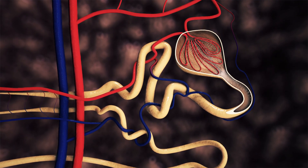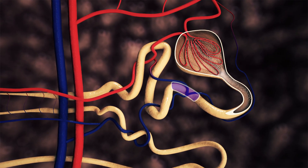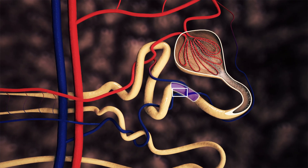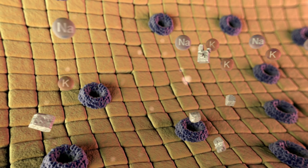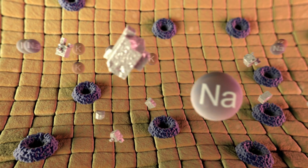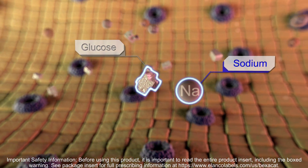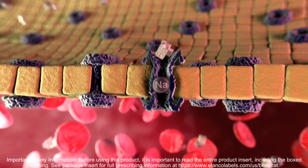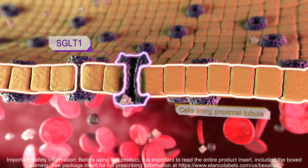These are SGLT1 and SGLT2. SGLT2 is the primary mechanism of glucose absorption from the filtrate, typically responsible for absorbing 90% of the filtered glucose, with the SGLT1 proteins reabsorbing the remaining 10%.